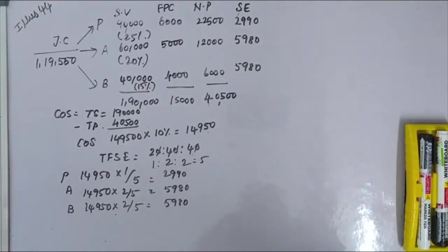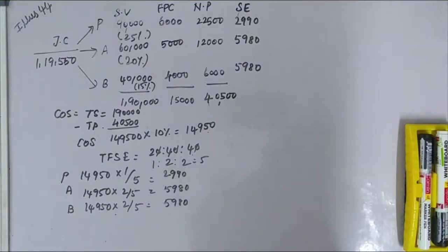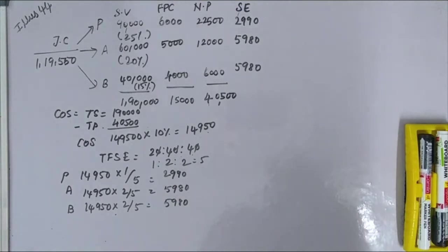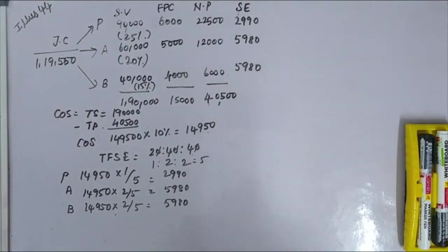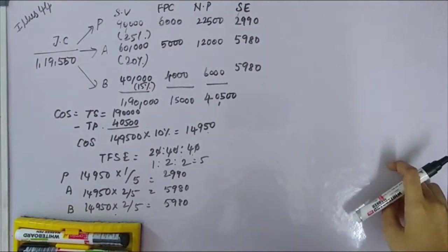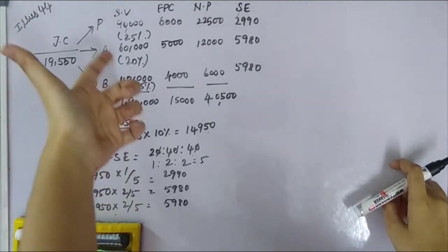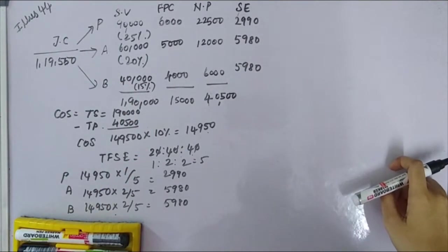Now for the first part: prepare a statement showing apportionment of joint cost to the main product and the two by-products. Joint cost apportionment using the NRV (Net Realisable Value) method is required for by-products.